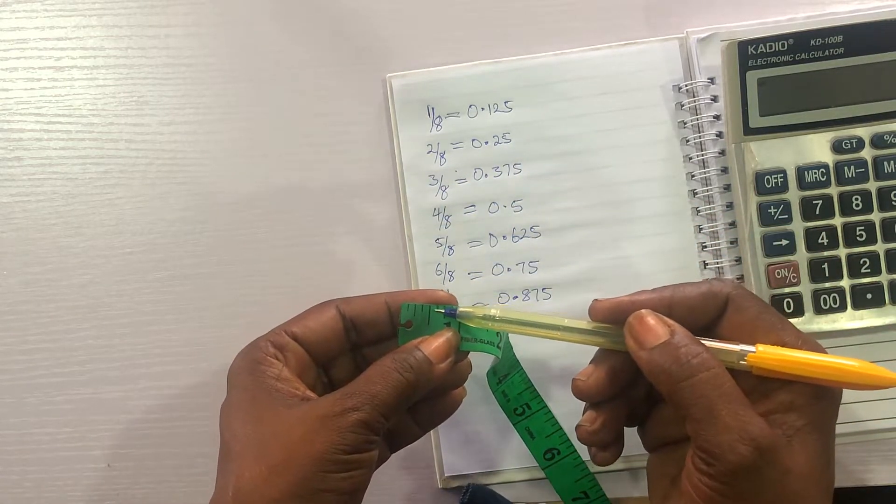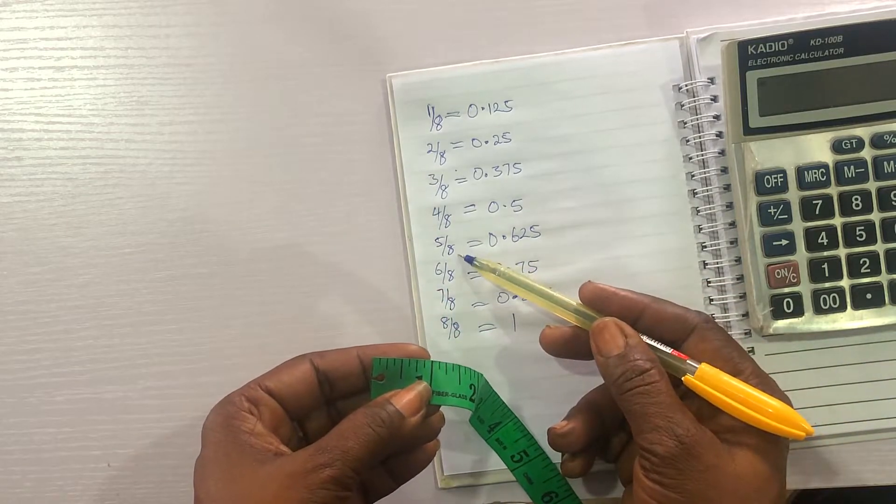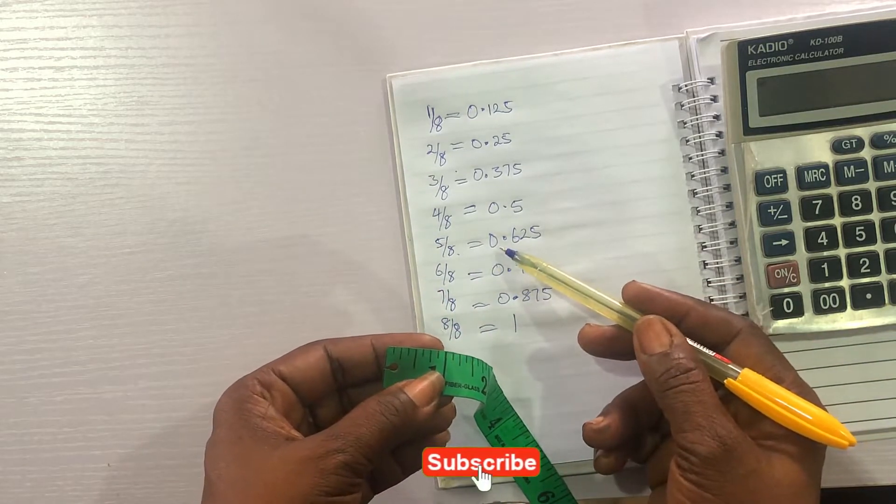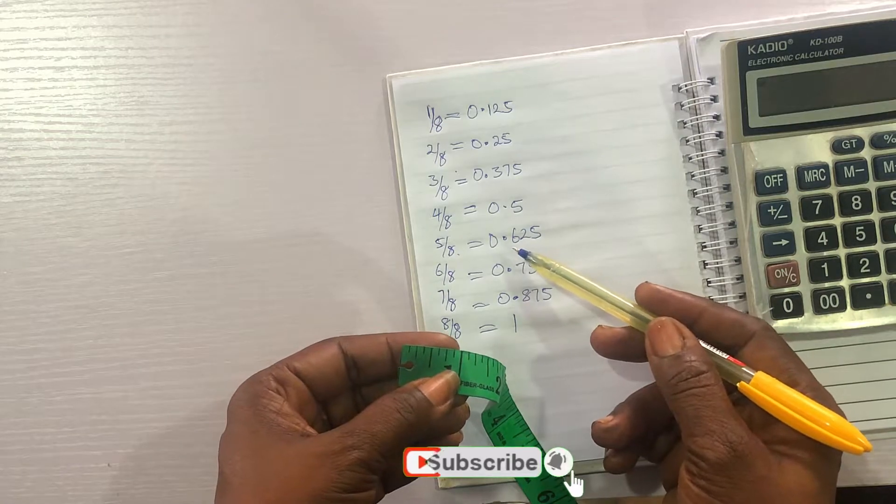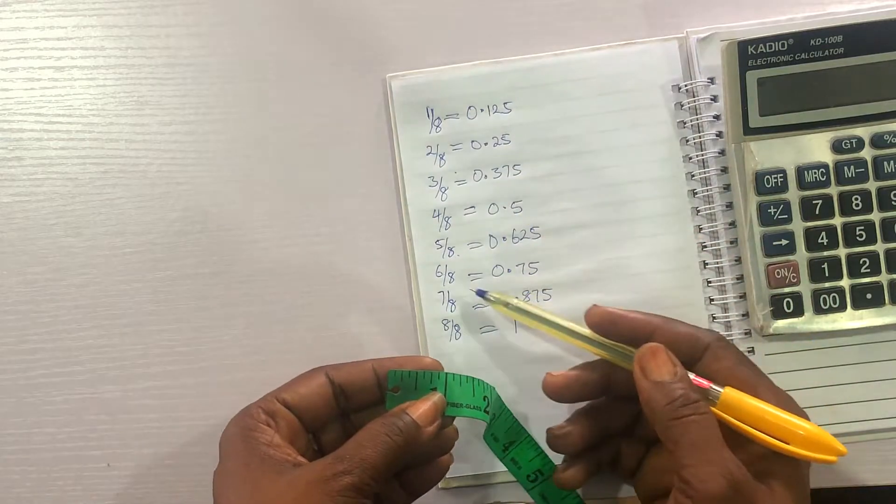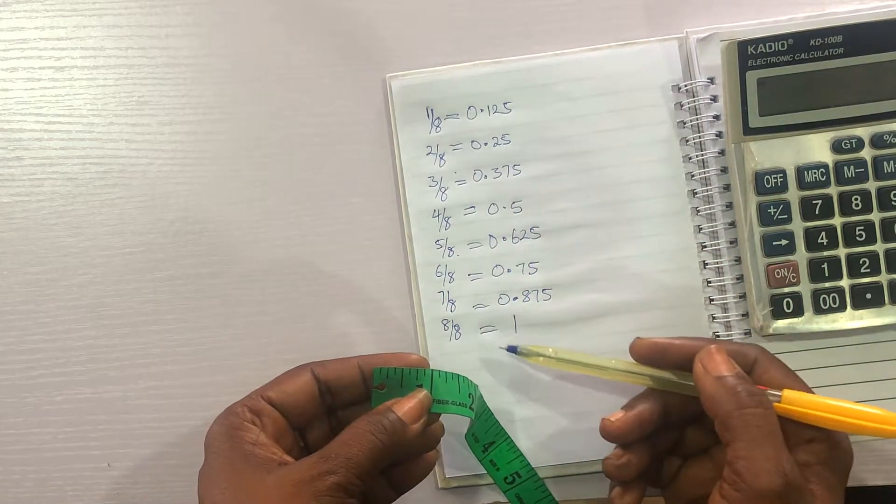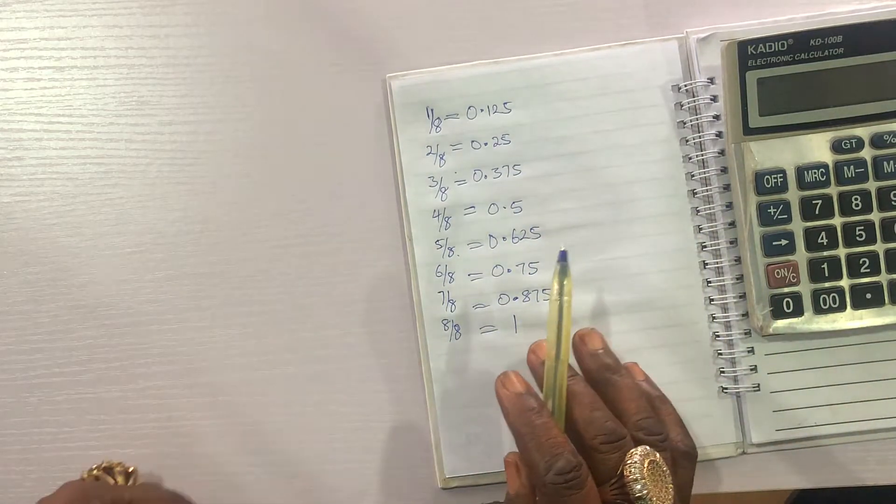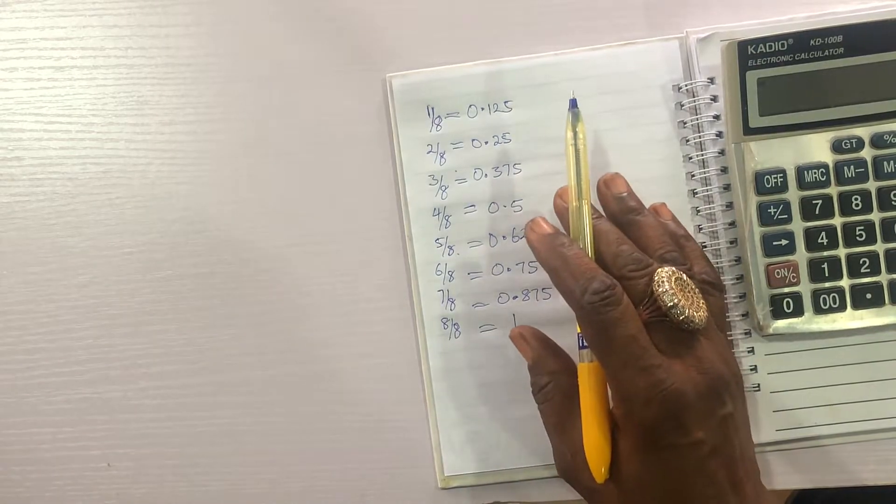Then, after an inch, we have five eights. This is five eights here, divided by eight gives us 0.625. Then, six eights, seven eights, and eight eights. This is all we have for this video.